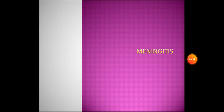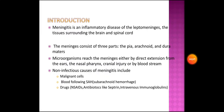Hello everyone, today we'll be talking about meningitis. Meningitis is an inflammatory disease of the leptomeninges, which are the tissues surrounding the brain and spinal cord. The meninges consists of three parts: the pia, arachnoid, and dura. Microorganisms reach the meninges either by direct extension from the ears, the nasopharynx, cranial injury, or by the bloodstream.